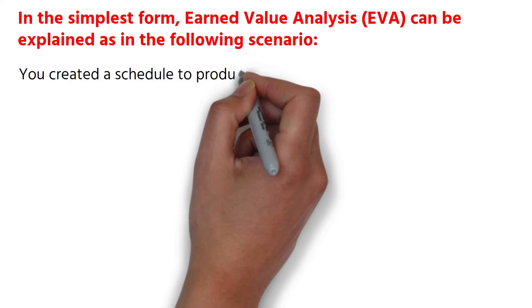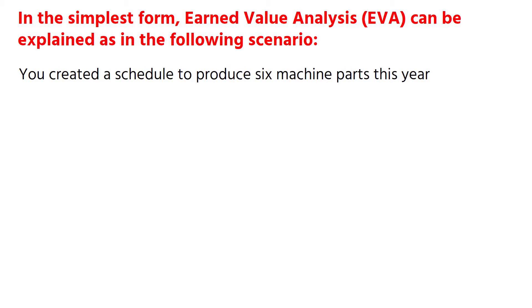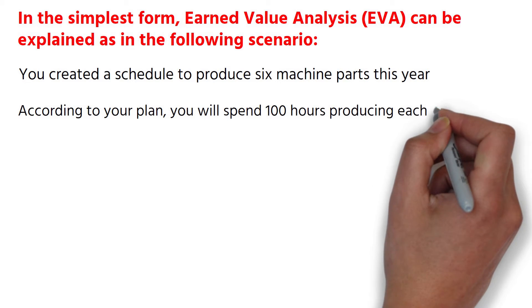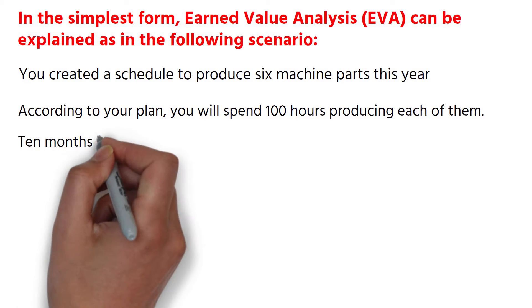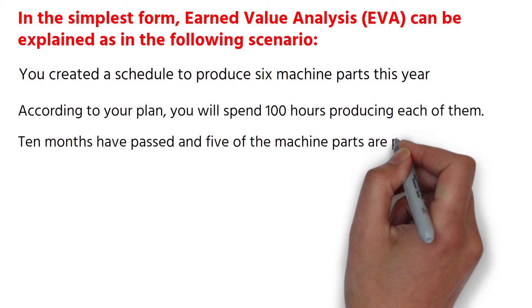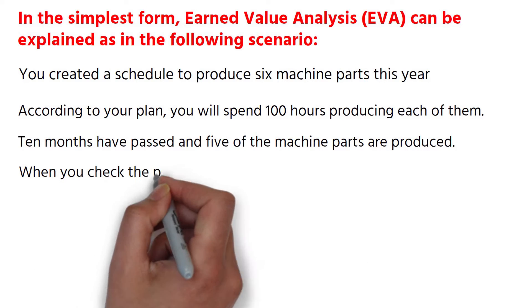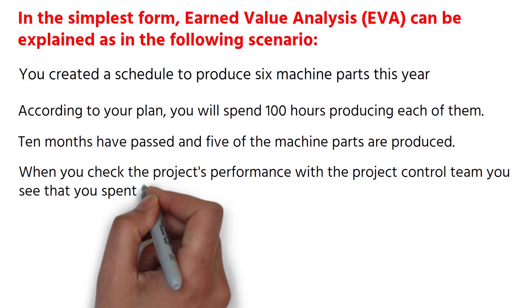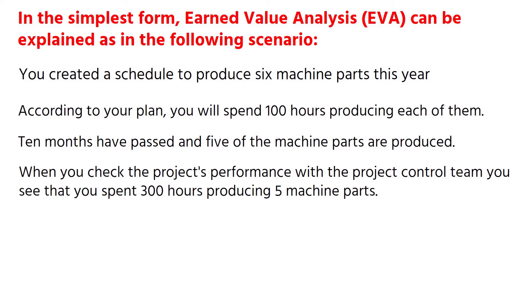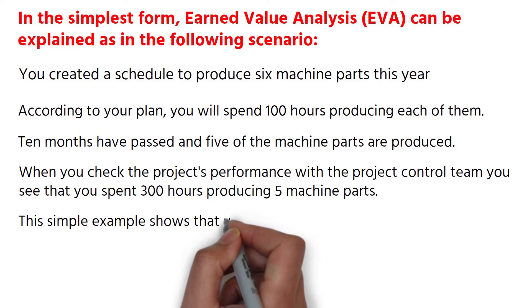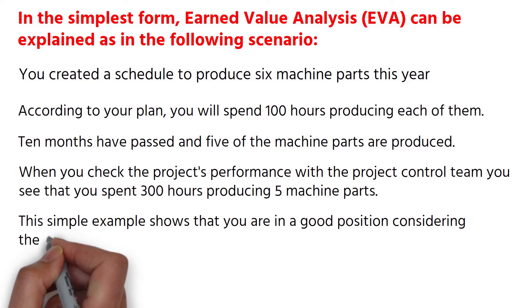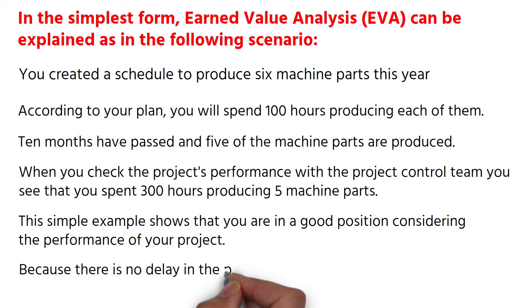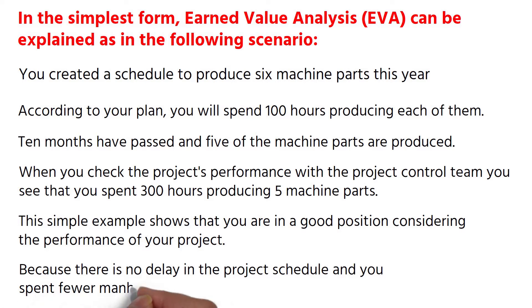You created a schedule to produce 6 machine parts this year. According to your plan, you will spend 100 hours producing each of them. 10 months have passed and 5 of the machine parts are produced. When you check the project's performance with the project control team, you see that you spent 300 hours producing 5 machine parts. This simple example shows that you are in a good position considering the performance of your project, because there is no delay in the project schedule and you spent fewer man hours than planned.